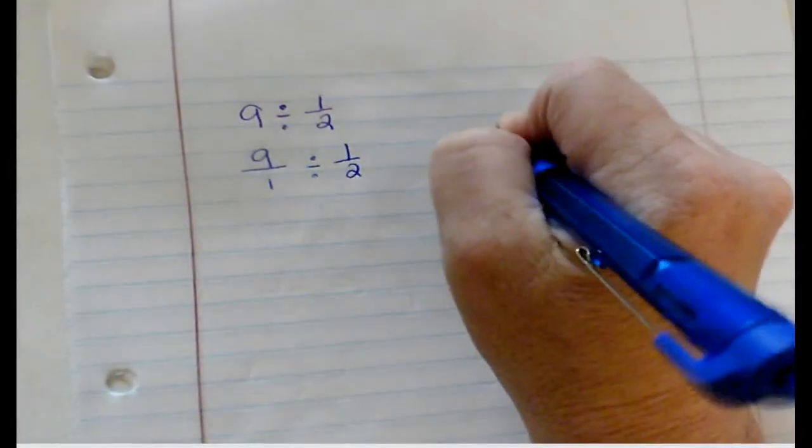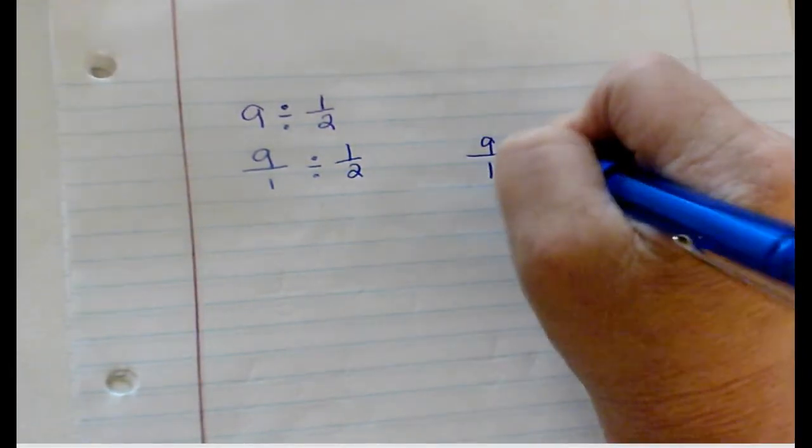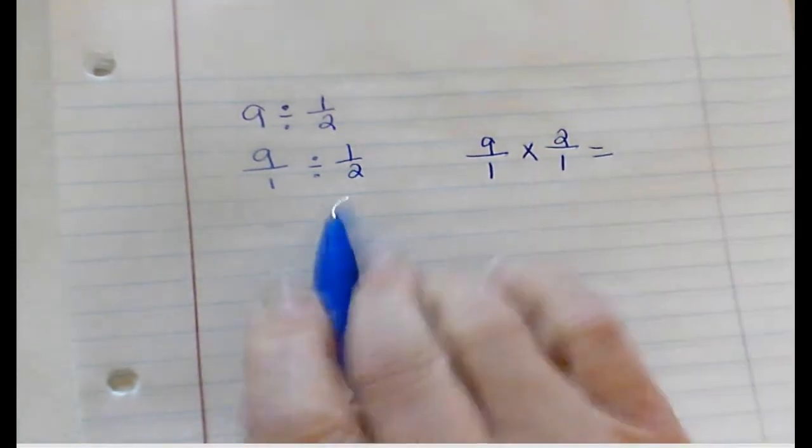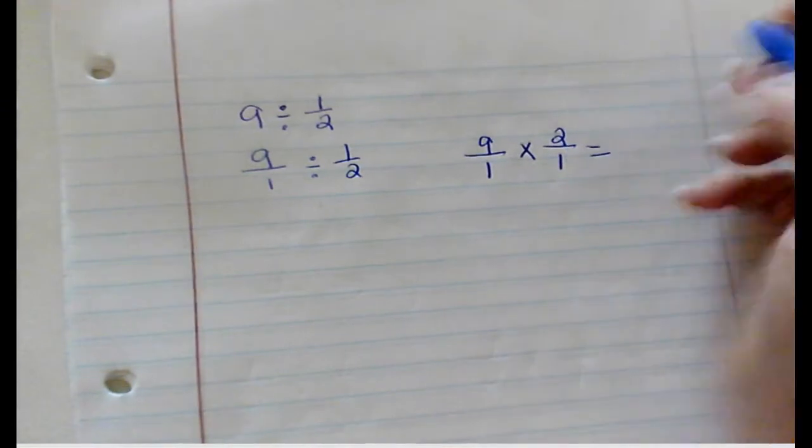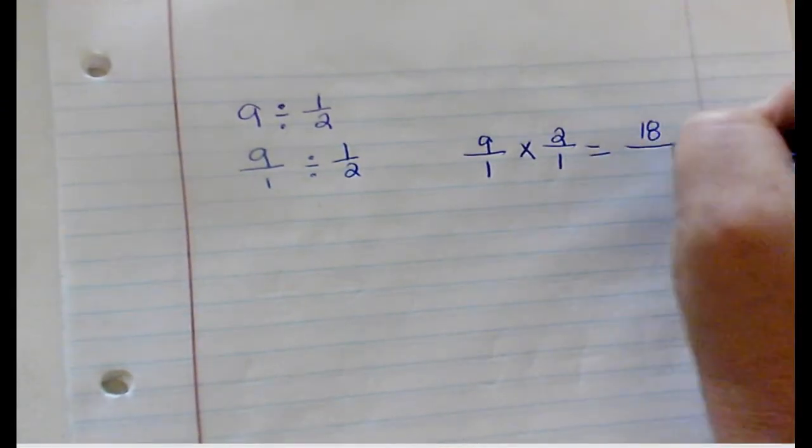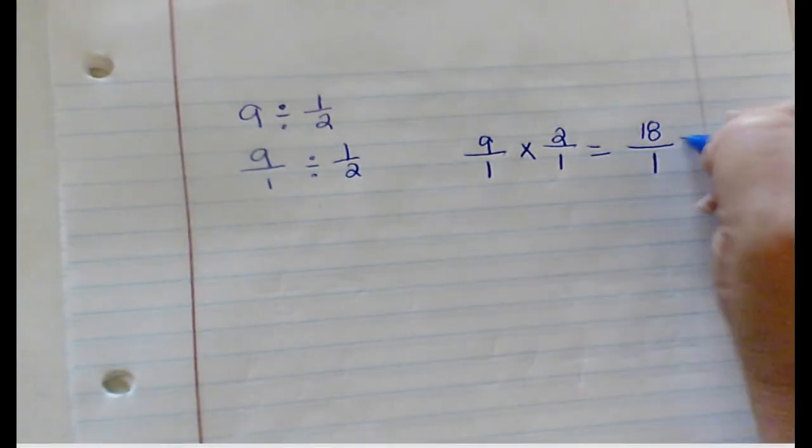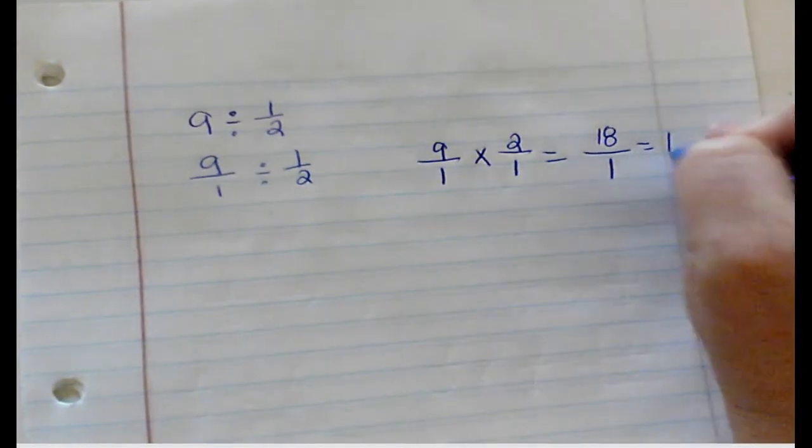9 divided by 1/2. You will have to put this into a fraction: 9 over 1 divided by 1/2. And then we will still keep change flip. 9 over 1 times 2 over 1, because we flip this one. 9 times 2 is 18, 1 times 1 is 1. 18 over 1 equals 18.